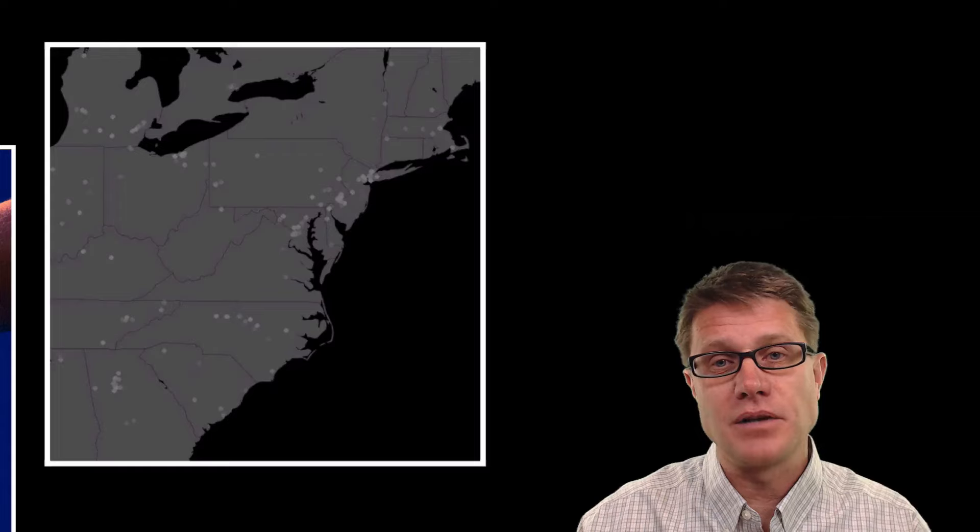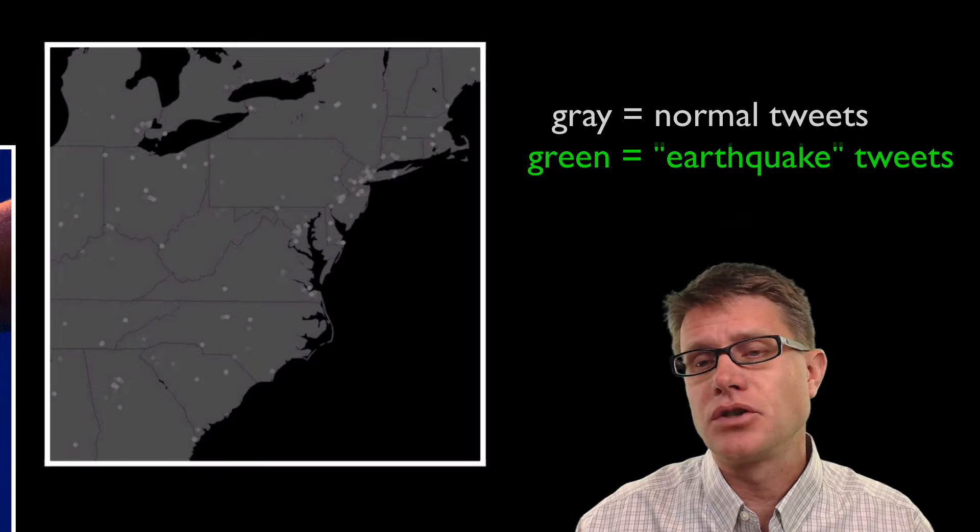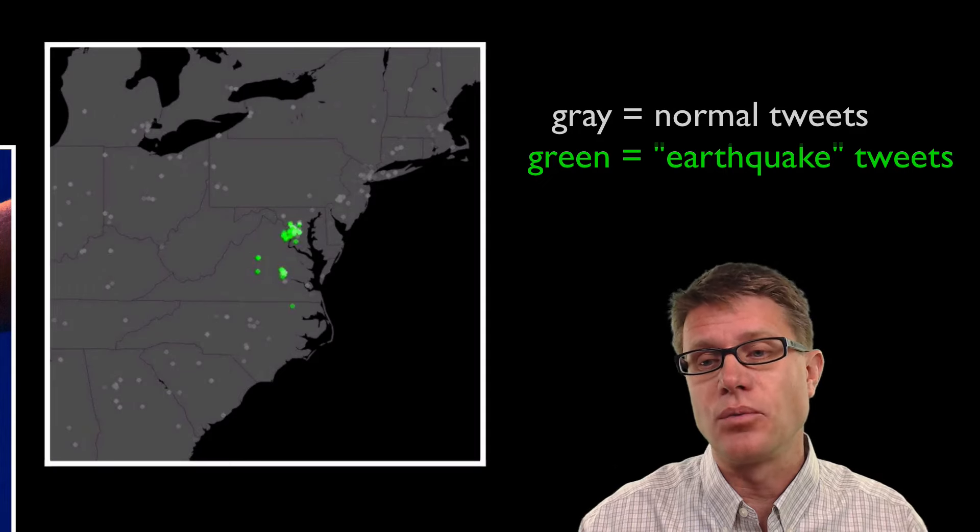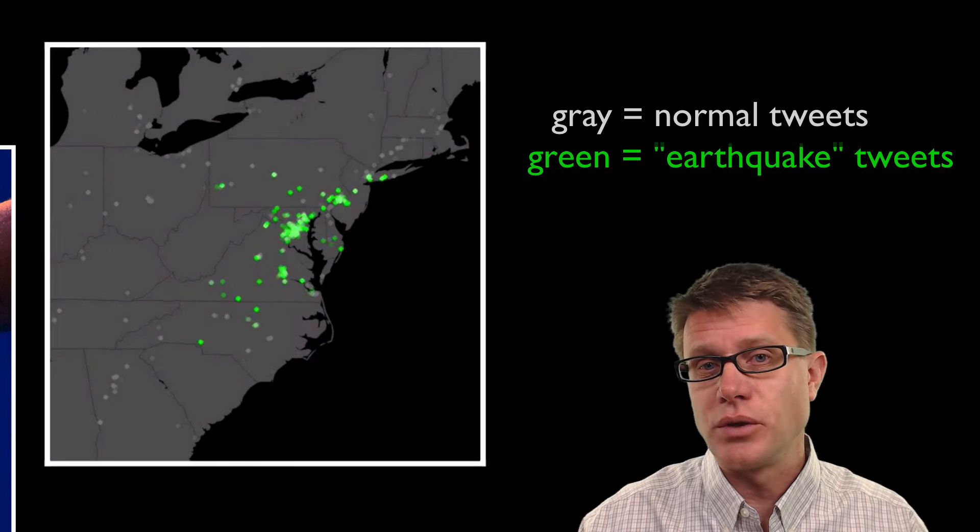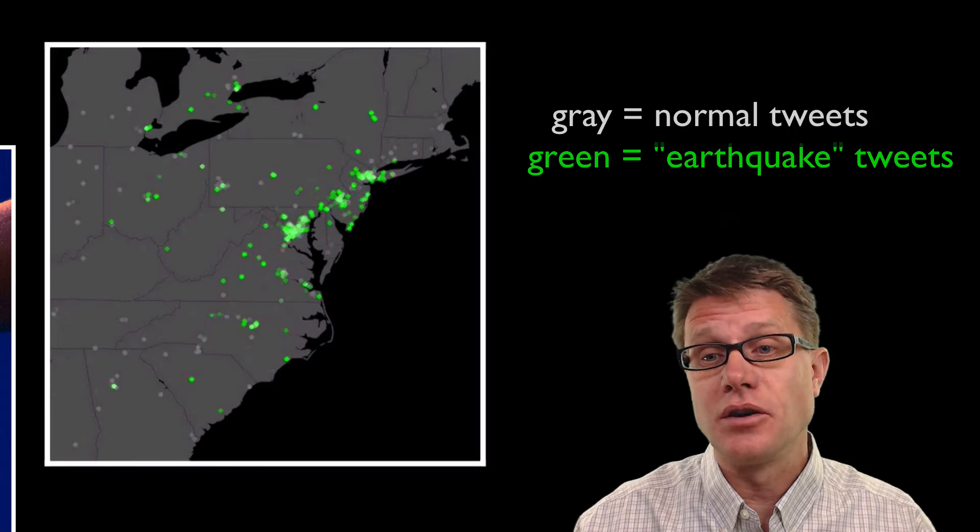So this was in 2011. There was an earthquake, you can see right here in Virginia. And they were monitoring Twitter and looking for people who tweeted the word earthquake. And they just kept track of where those tweets were and how long it took for them to reach those people.